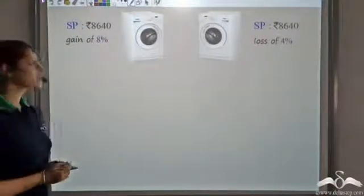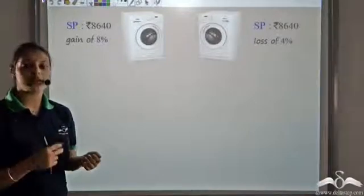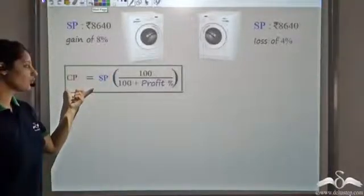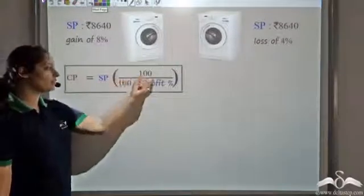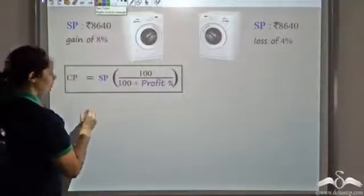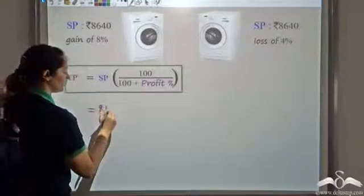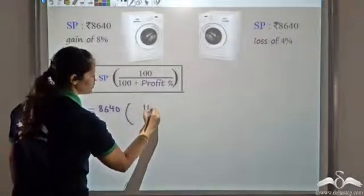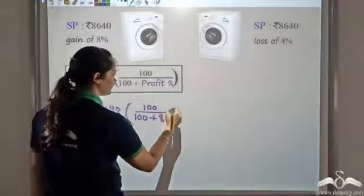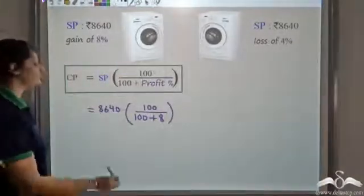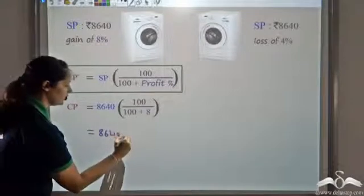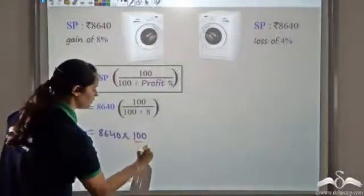We know the gain is 8 percent. When we know the selling price and the profit percent, we can find the CP which is the cost price. Cost price can be found by this formula: selling price into 100 upon 100 plus profit percent. Substituting the values, selling price is 8640 and profit is 8 percent. This gives us 8640 times 100 upon 108.